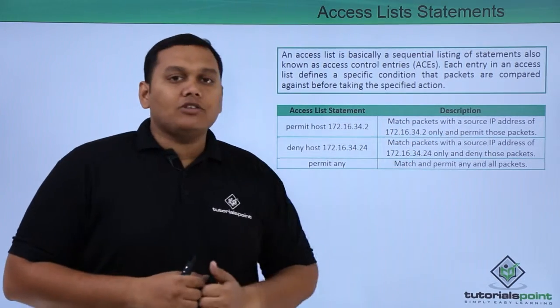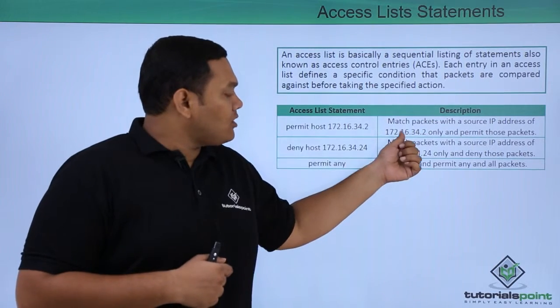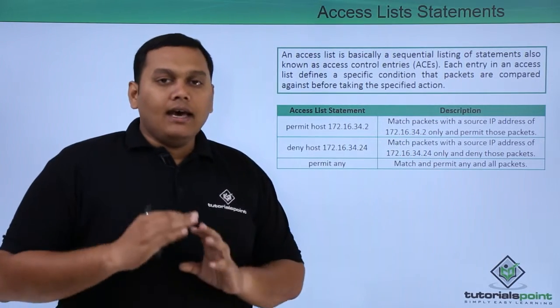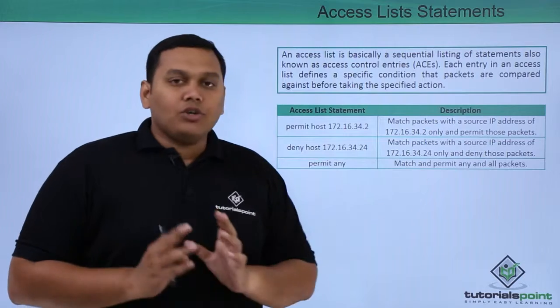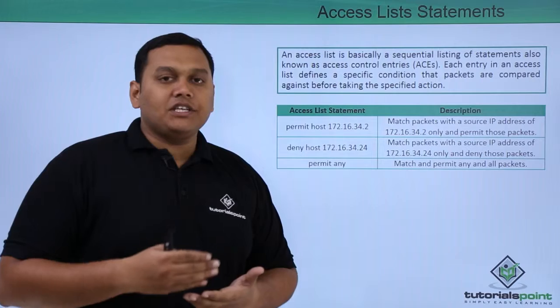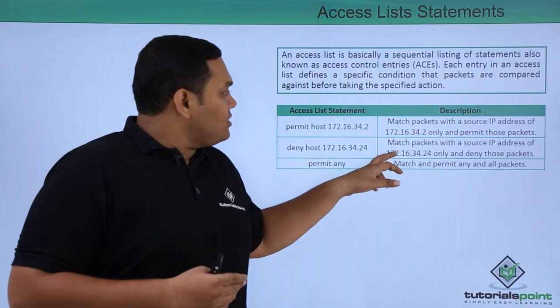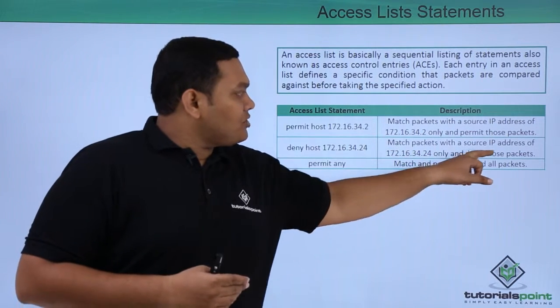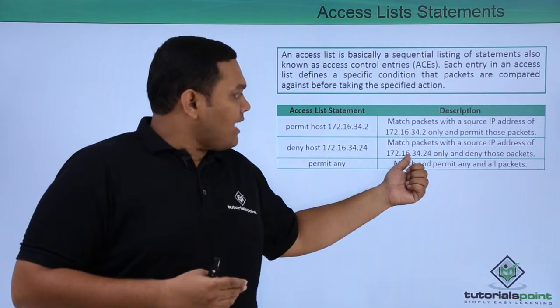Similarly, if you give a statement like 'deny host 172.16.32.2', it will match packets with the source IP address of this IP only and deny those packets. So it will match to the IP address and permit or deny accordingly.